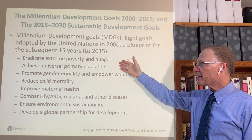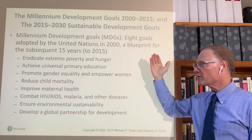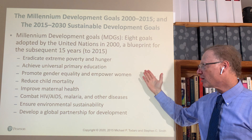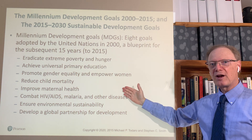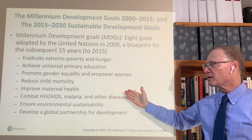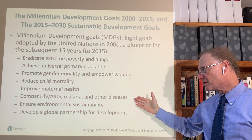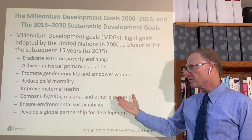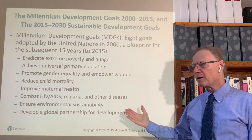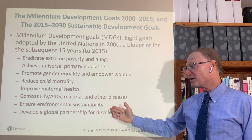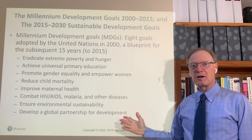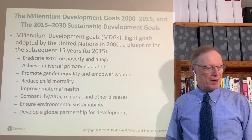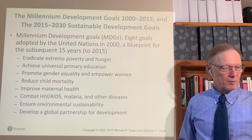The MDG goals were: to eradicate poverty and hunger, achieve universal primary education, promote gender equality and empower women, reduce child mortality, improve maternal health, combat major diseases including HIV/AIDS and malaria, ensure environmental sustainability, and establish the global partnership.